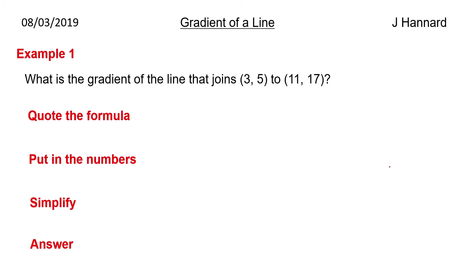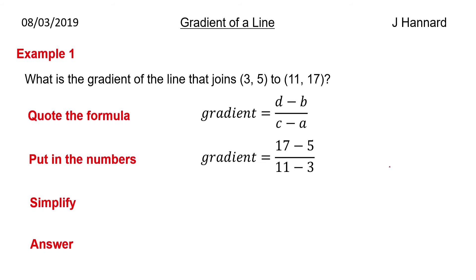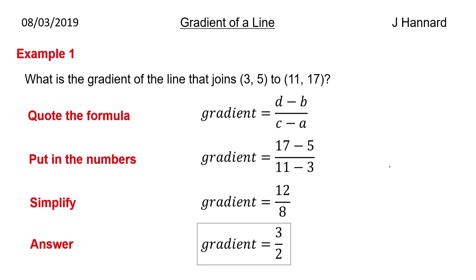Let's do an example. What's the gradient of the line that joins (3, 5) to (11, 17)? First we quote our formula: gradient equals back-take-back over front-take-front. Put in our numbers: d is 17, take away 5, over 11 take away 3. Tidy it up — that's 12 over 8, which simplifies to 3 over 2. So that is the gradient of the line joining those two coordinates.